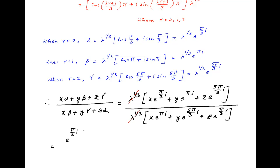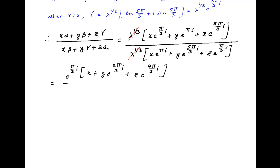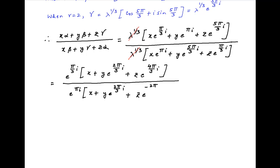The value of this expression equals e^(πi/3) multiplied by (x + y · e^(2πi/3) + z · e^(4πi/3)) divided by e^(πi) multiplied by (x + y · e^(2πi/3) + z · e^(−2πi/3)).